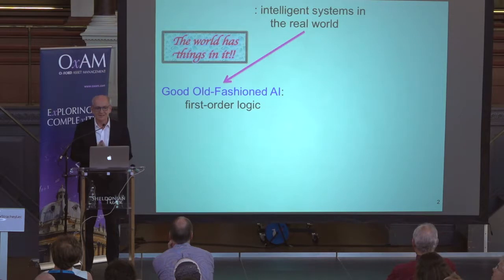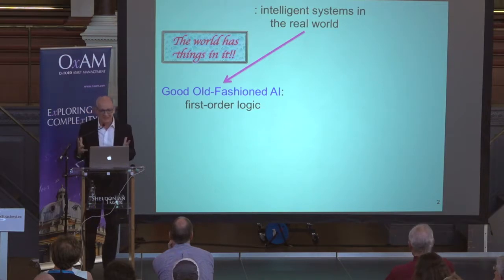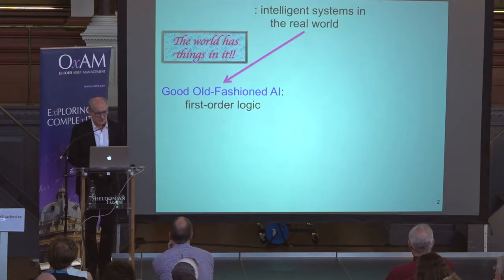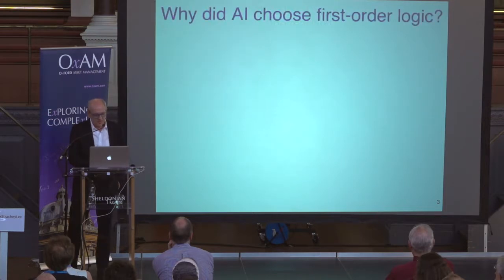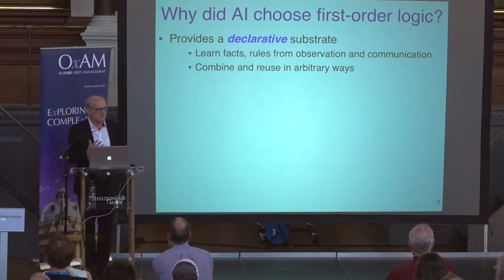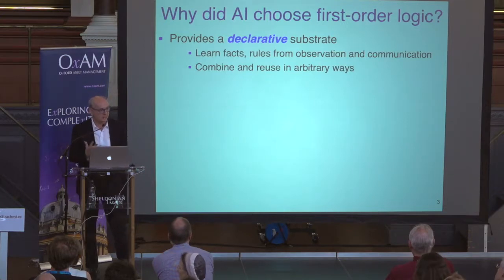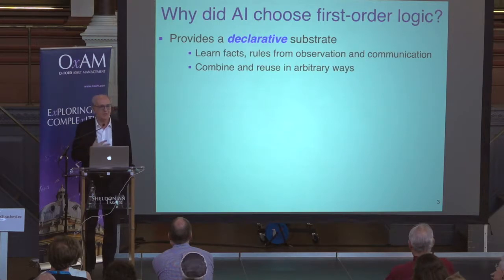Because the world has things in it, you need a mathematical basis that has things in it — the mathematics of objects and relations. For this reason, John McCarthy proposed that we build AI around first-order logic as the mathematical framework. This was a big departure. Up until that point, when you thought about robots or control systems, it was all continuous differential equations. If you were in statistics, it was linear regression and mixtures of Gaussians — things that seemed completely disconnected from first-order logic.